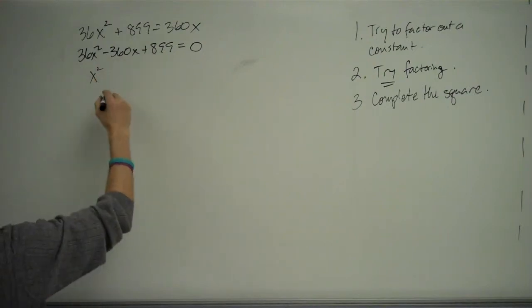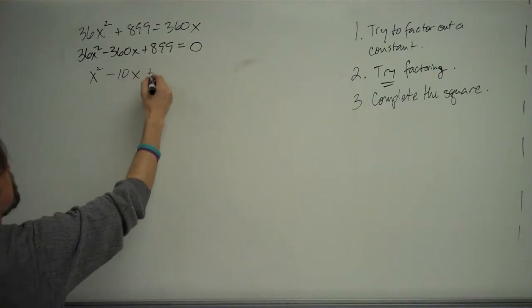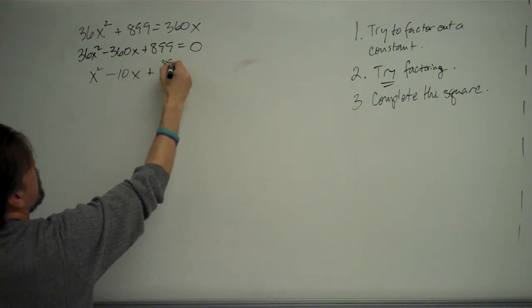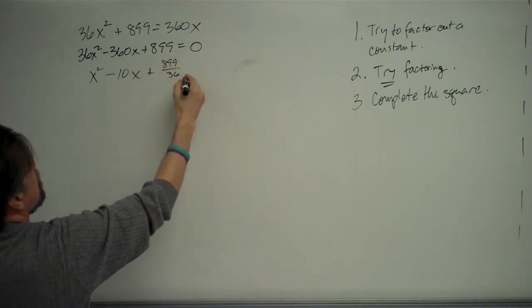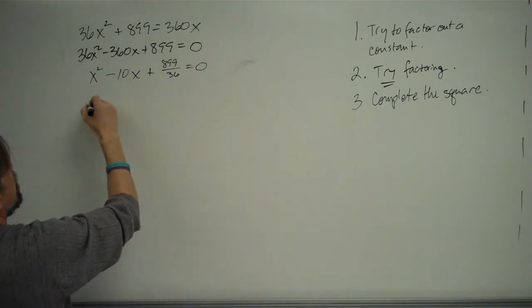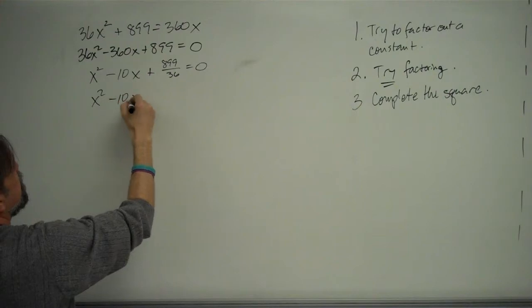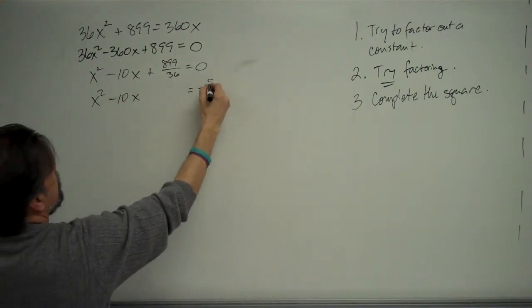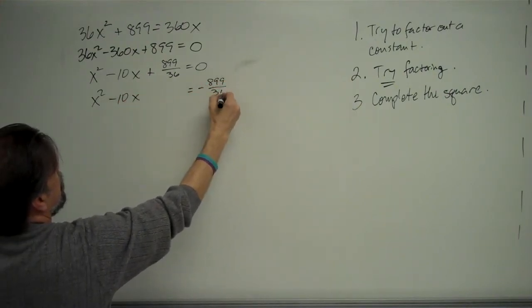We can divide all three of our terms by 36: x squared minus 10x plus whatever 899 over 36 is. And then we want to subtract that last term to get x squared minus 10x equals negative 899 over 36.